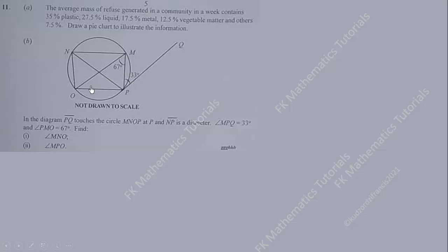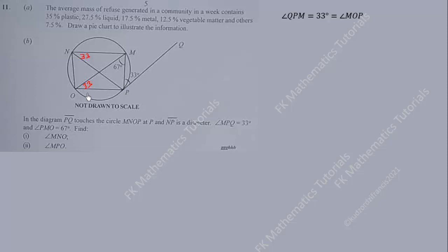We know that angle MPQ equals angle MNP because angles in alternate segments are equal. So this angle is 33 degrees. Since this 33-degree angle is in the same segment as angle MOP, angle MOP is also 33 degrees — both angles are subtended by the same arc. Therefore angle MNP is 33 degrees.